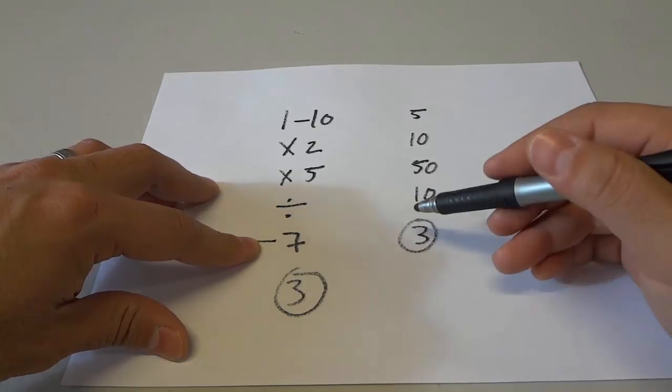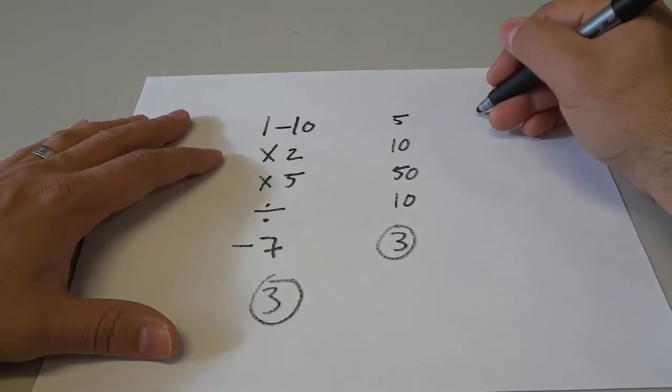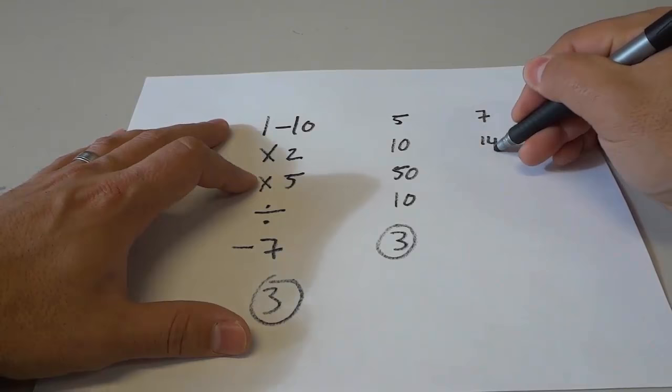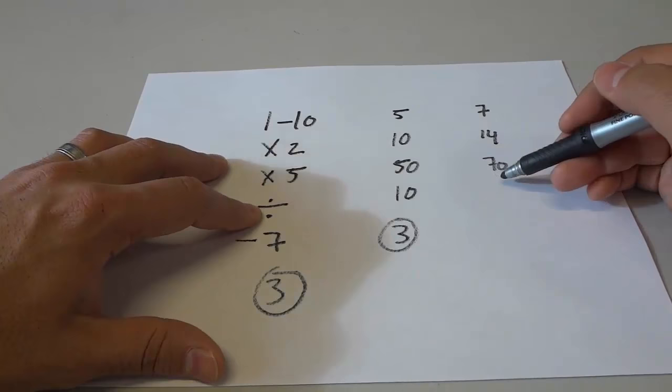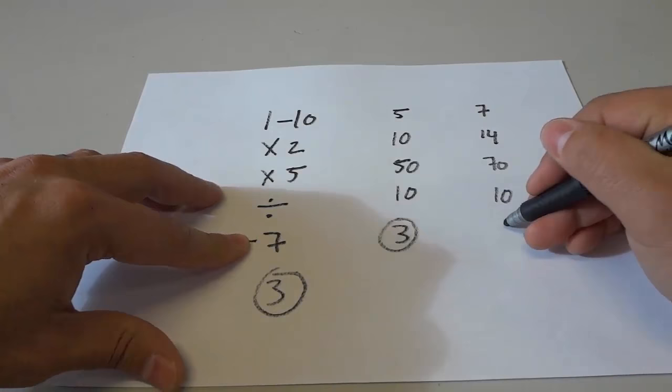Now here's another example. Let's say that they chose the number 7. If they take 7 and multiply it by 2, they're going to get 14. If they take 14 and multiply it by 5, they're going to get 70. Then if they divide by the original number, which was 7, they are going to get 10. And then if they subtract 7, they're going to get 3. And when you guess 3, once again, you will blow their mind.